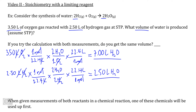Right here, you can see that we have a problem. These numbers are not the same depending on which gas measurement we used originally. Because we do not get the same volume, how do we know which calculation is correct?